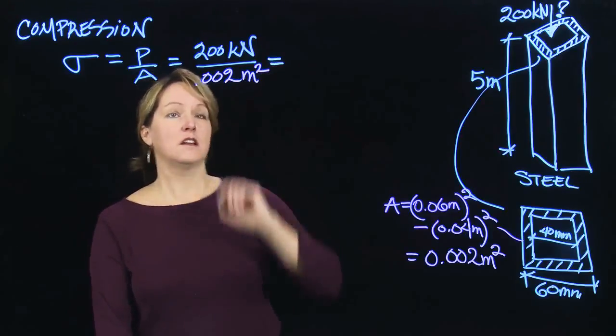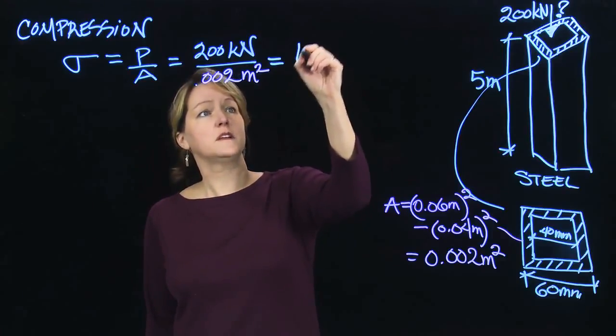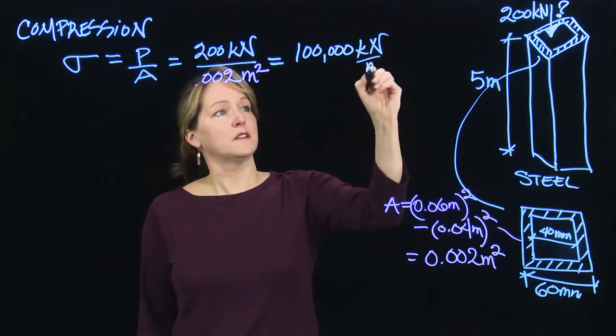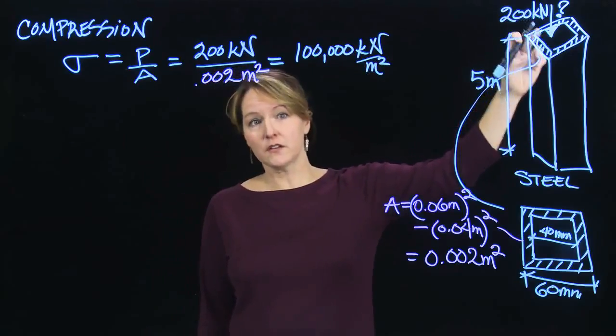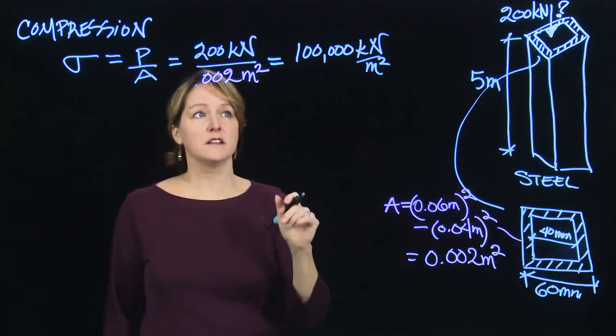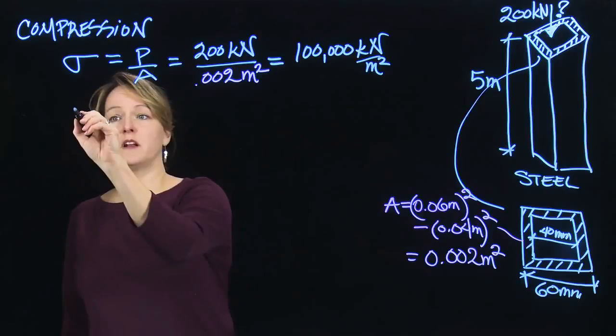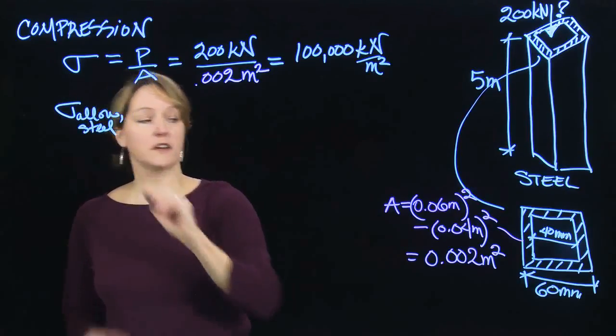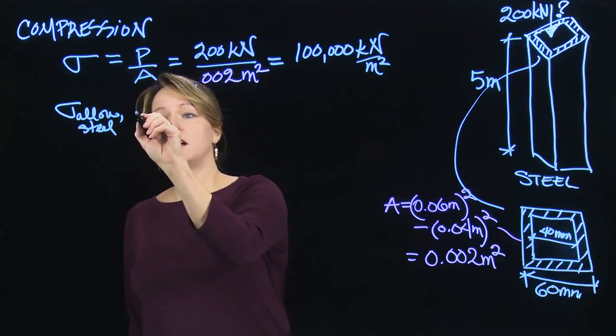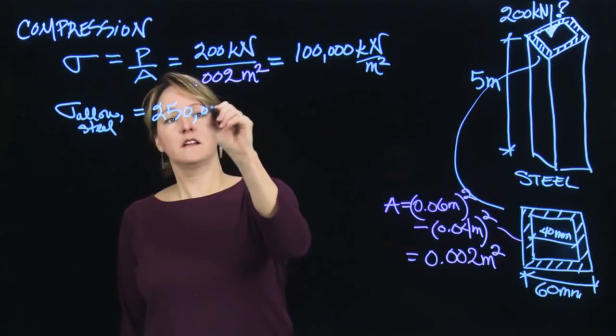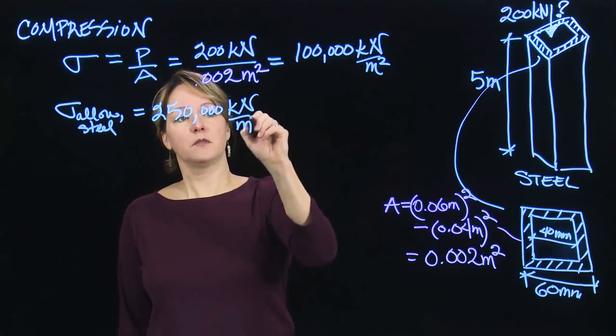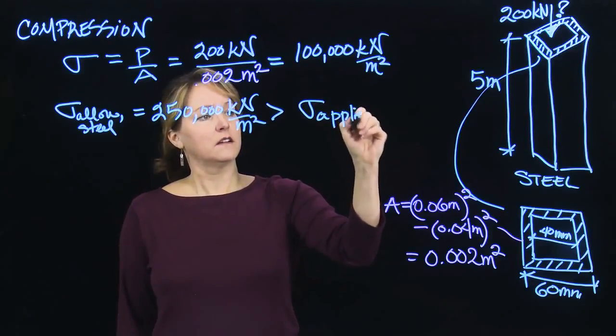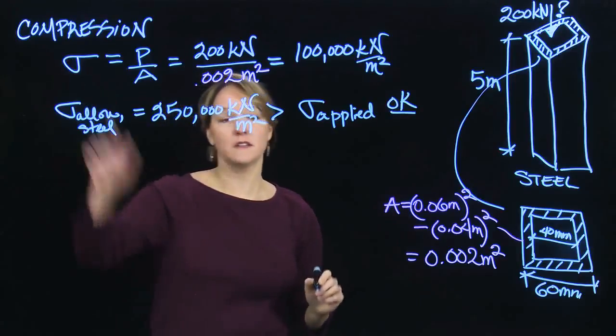And that'll allow me to calculate the stress, and that stress is going to be 100,000, a fairly high number, kilonewtons per meter squared. So that's the stress that I get due to this 200 kilonewtons pushing down on the column with this cross-section. I want to make sure that's okay, so I'm going to want to look up the allowable stress for steel. So I want to know how much stress steel can handle, and that allowable stress is 250,000 kilonewtons per meter squared, so it's greater than my stress applied.